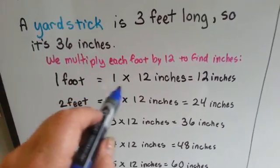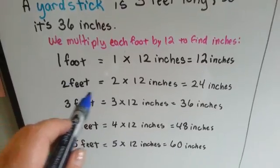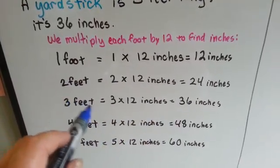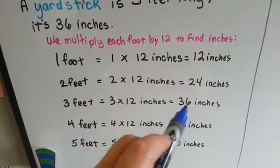One foot, one times 12 inches, is 12 inches. Two feet is two times 12 inches, 24 inches. Three feet is three times 12 inches, so it's 36 inches.